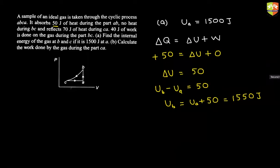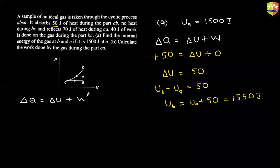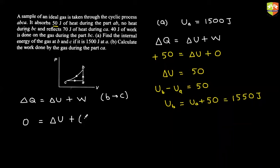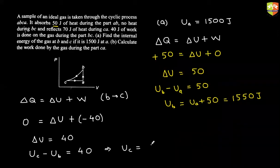Now let's find out the internal energy at point C. Again, I'll be using same formula. ΔQ = ΔU + W. But now I'm using it for the process B to C. Now for B to C, do I know ΔQ? B to C, no heat is involved. So ΔQ is zero. ΔU, I'll keep it like that only right now. And do I know the work done from B to C? 40 Joules of work is done on the gas. So work is done on the gas. So work done is negative, minus 40. So I'm getting ΔU is equal to 40. ΔU is what? U at C minus U at B. This will be 1590 Joules.